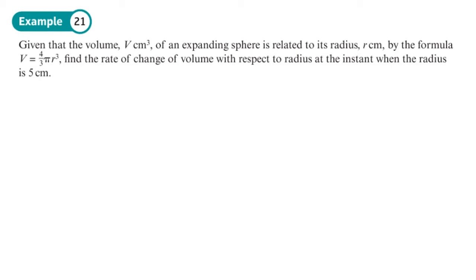Given that the volume V of an expanding sphere is related to its radius by the formula V equals 4/3 pi R cubed, which is the formula for a sphere, find the rate of change of the volume with respect to the radius at the instant when the radius is 5 centimeters. Now, if you're not sure what to do, just read the sentence. The sentence will tell you what to do. So find a rate of change of volume.